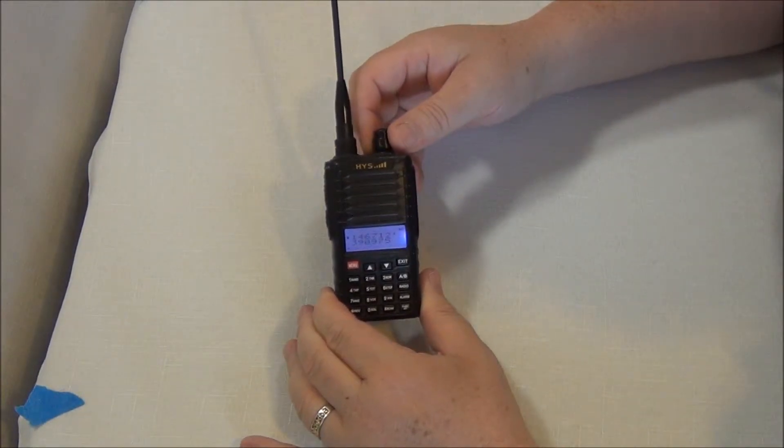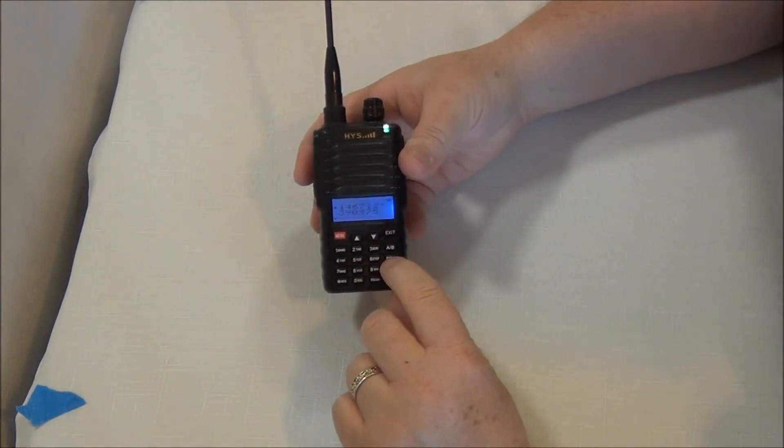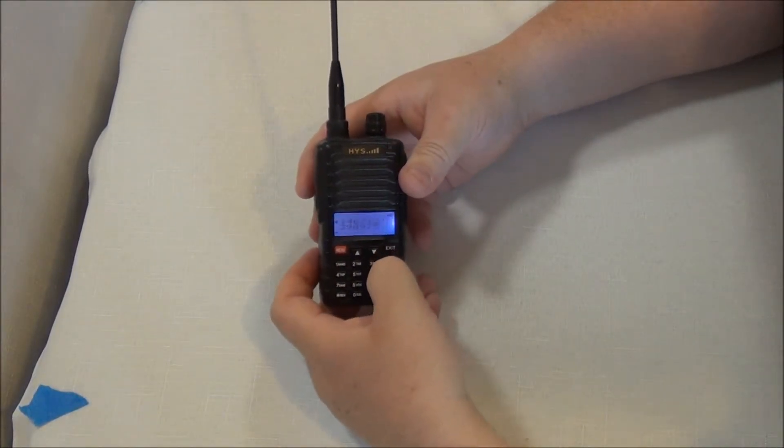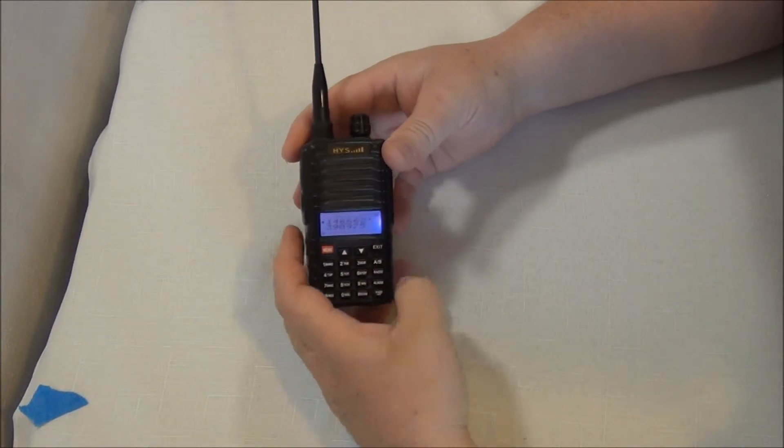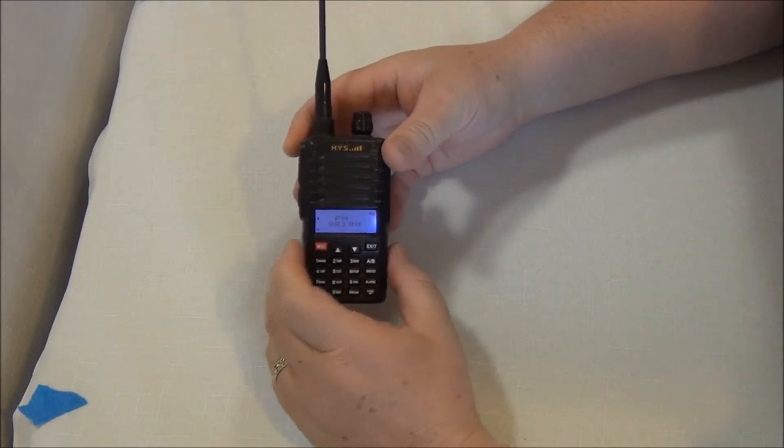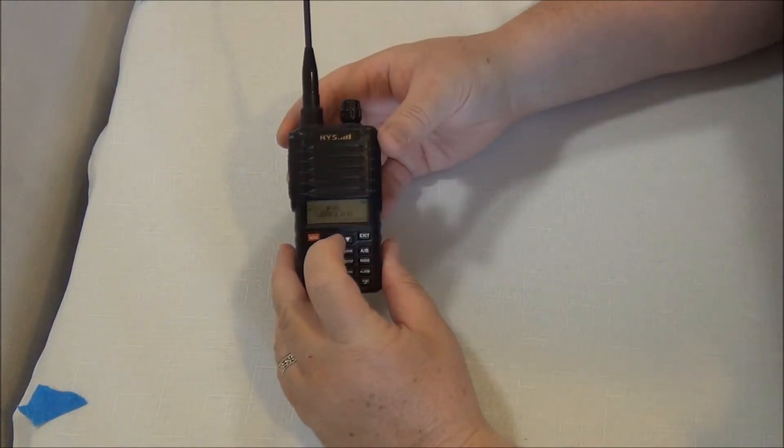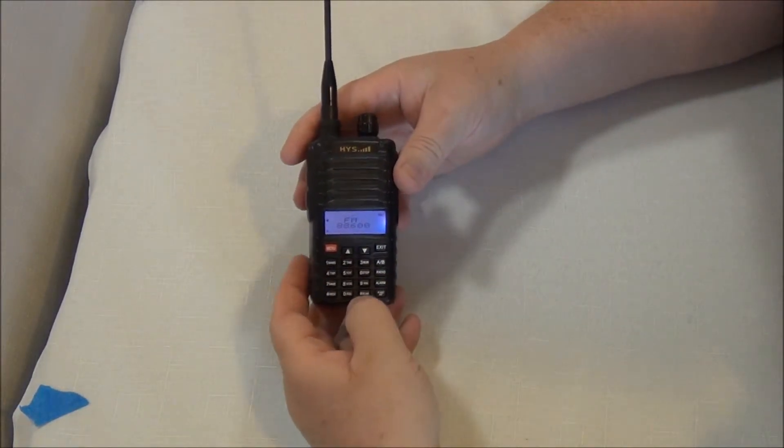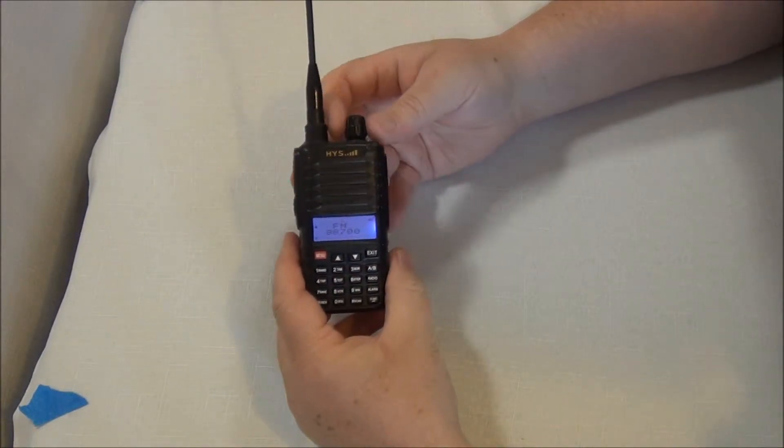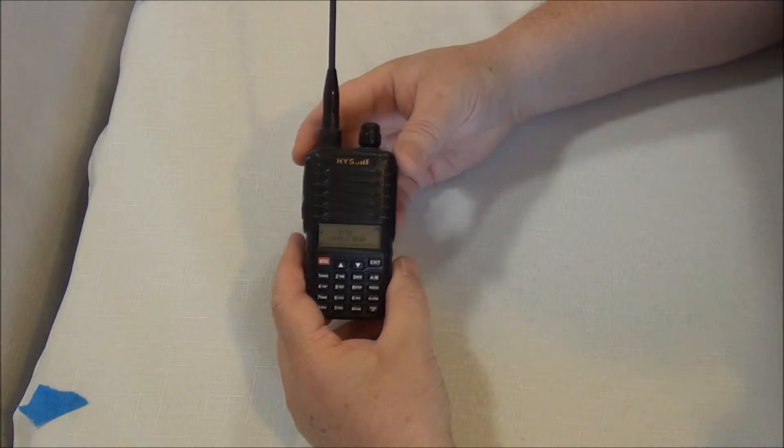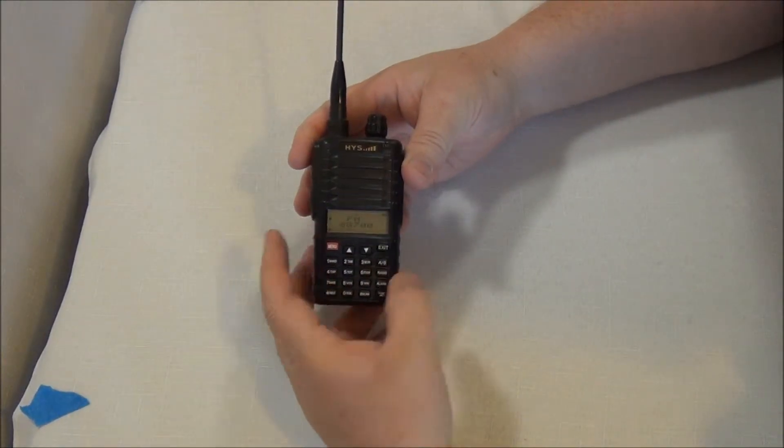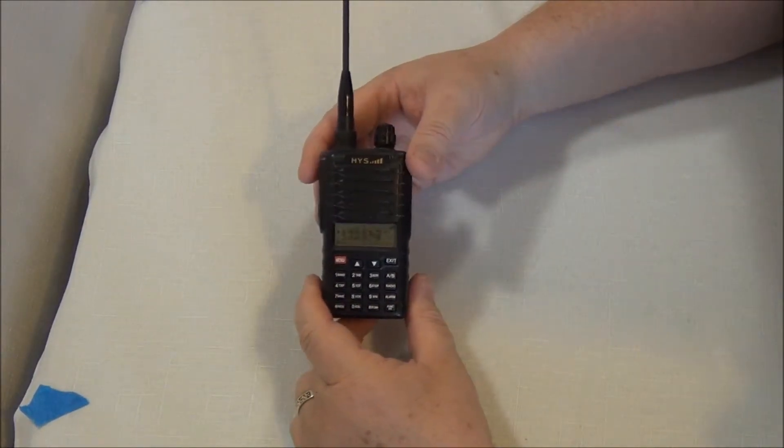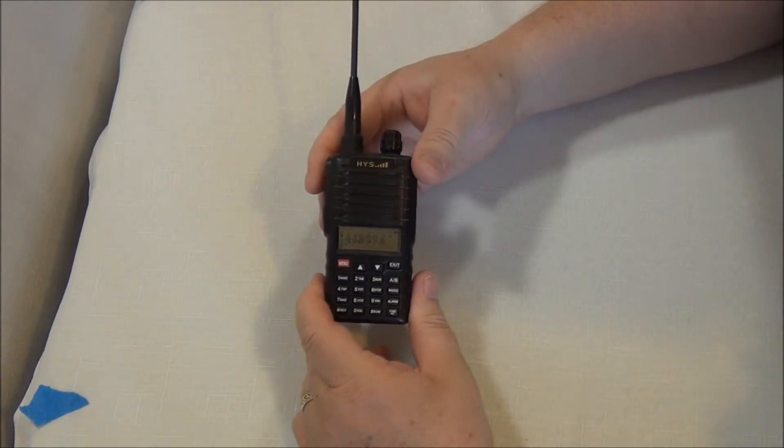Now the other thing I want to show you, I don't know if it's anything that I would particularly use but it is there, is there's a little radio button. And when you hit that radio button, let me get off this frequency here, it goes into what I would call broadcast FM. And you can scroll up. So if you're bored and you don't have radio and you want to listen to your favorite music channels, this does have a little FM radio built into it, which is kind of an interesting little feature.